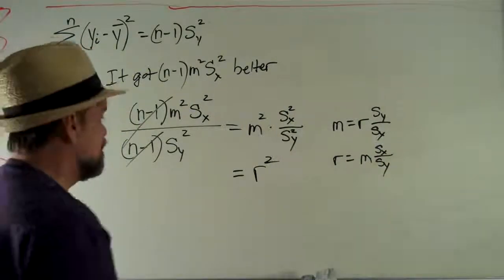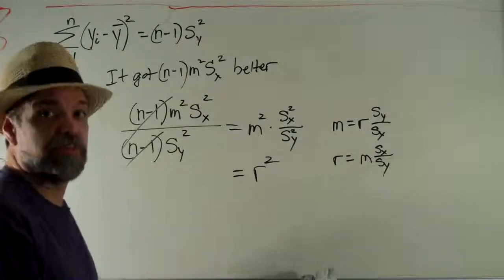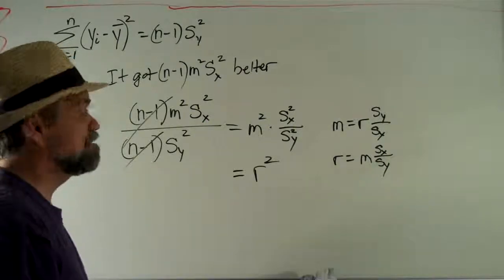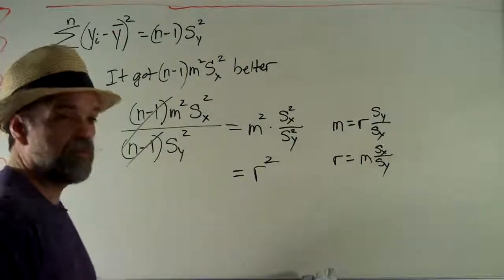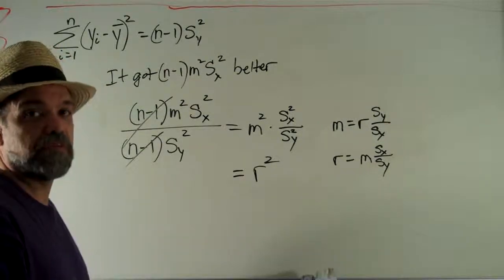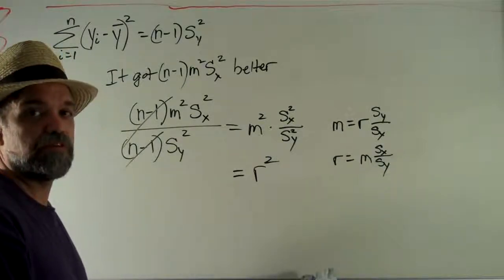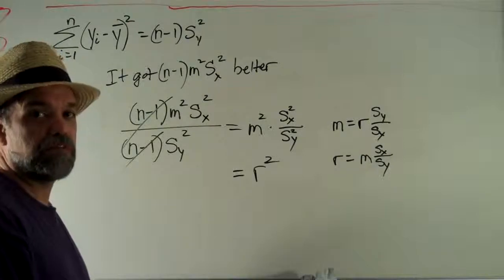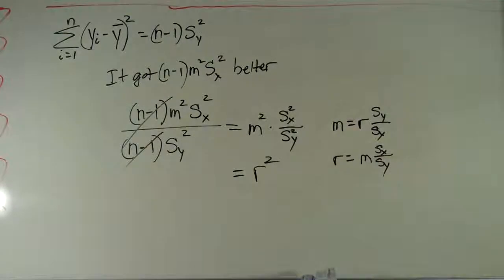This is why when r squared is 1, it gets kind of infinitely better. Our least squares goes all the way down to zero. And when r squared is zero, it means it didn't help us at all. That's where r squared comes in handy. That's why it describes how much of the variation in the y data gets explained by the variation in the x data. That's why it's all so good.